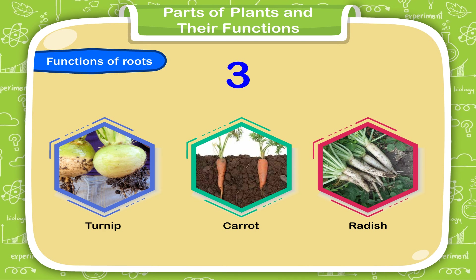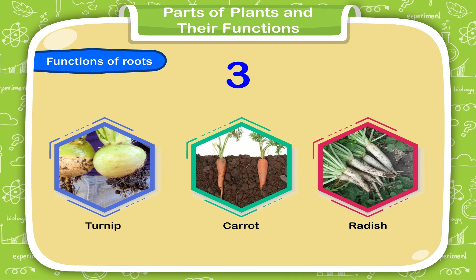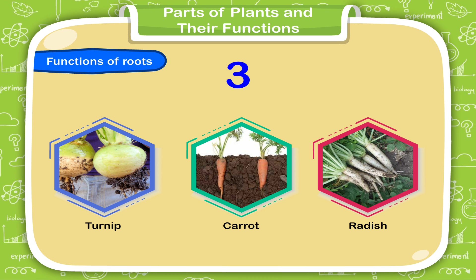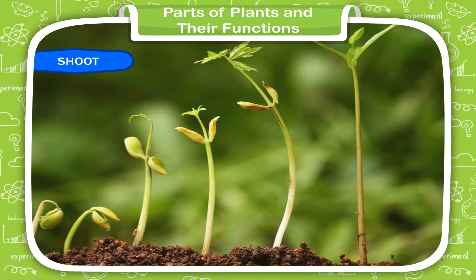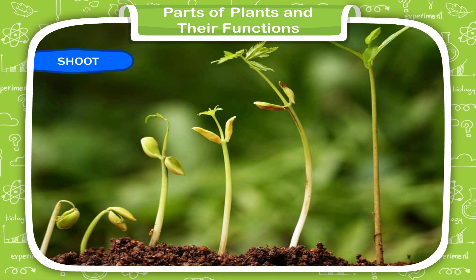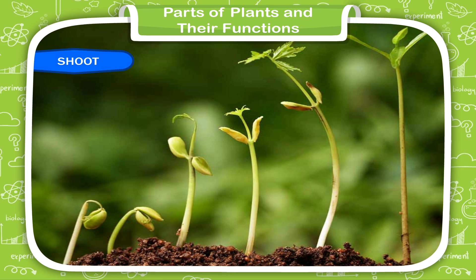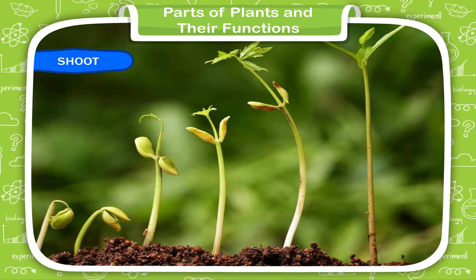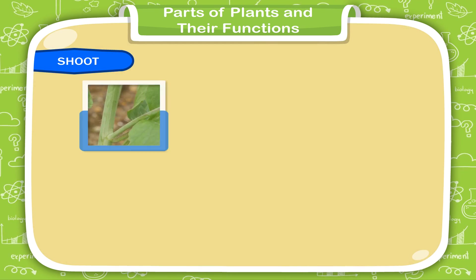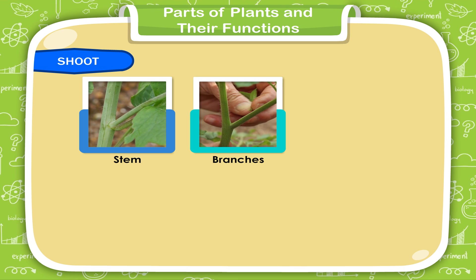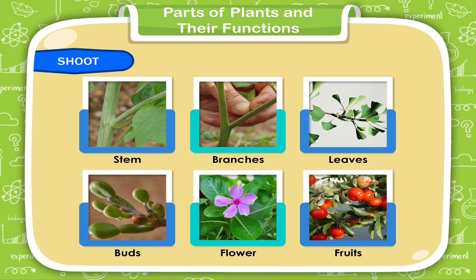Third, the roots of some plants like turnip, carrot, and radish store food in them and are thus edible. The shoot is the part of a plant which grows above the soil. The shoot of a plant bears different parts such as stem, branches, leaves, buds, flowers, and fruits.